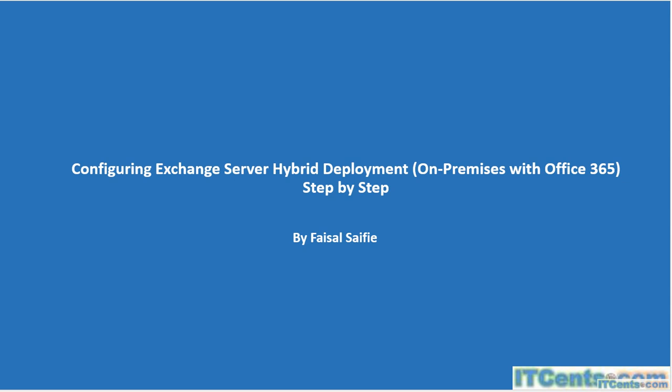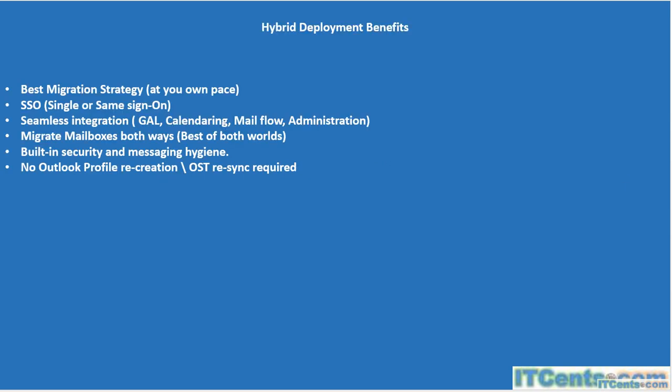Once you set up your environment for hybrid deployment, it provides several capabilities. It enables single sign-on — using Active Directory Federation Services — or same sign-on using Microsoft Azure AD Connect, which can sync passwords from your on-premises Active Directory to Microsoft Azure Active Directory used by Office 365. Seamless integration means you will have a global address list where Office 365 mailbox recipients as well as on-premises mailbox recipients all appear together.